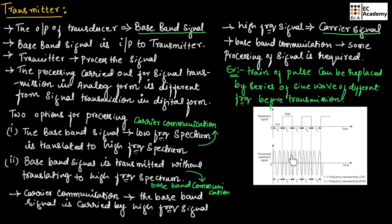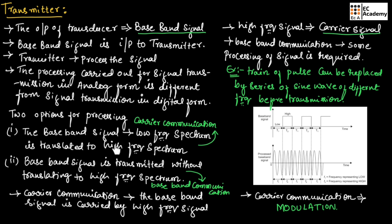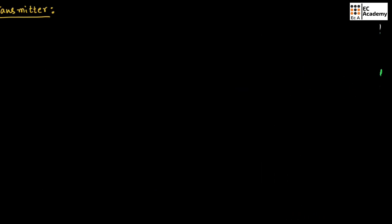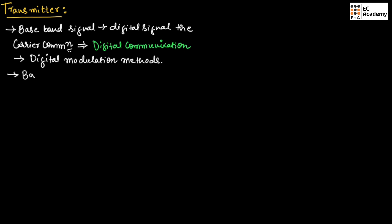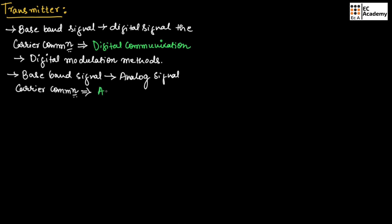In carrier communication, the baseband signal with low frequency is converted into the high frequency spectrum. This process is known as modulation. The process of translating the baseband signal from low frequency spectrum into high frequency spectrum is known as modulation. If the baseband signal is a digital signal, the carrier communication is known as digital communication, and digital modulation methods are used. If the baseband signal is an analog signal, the carrier communication is known as an analog communication system, which uses analog modulation methods.